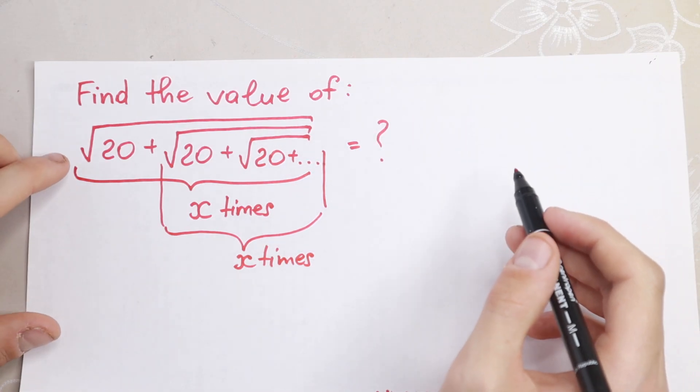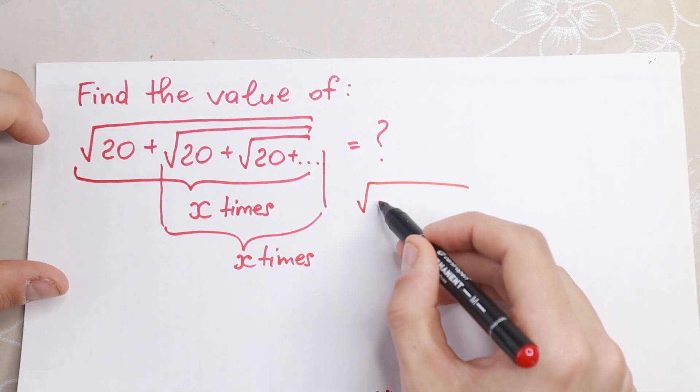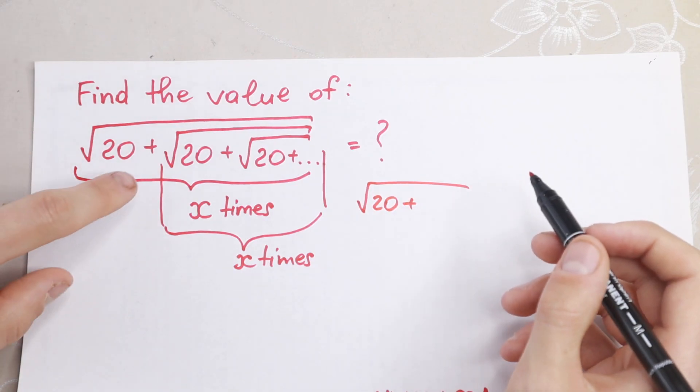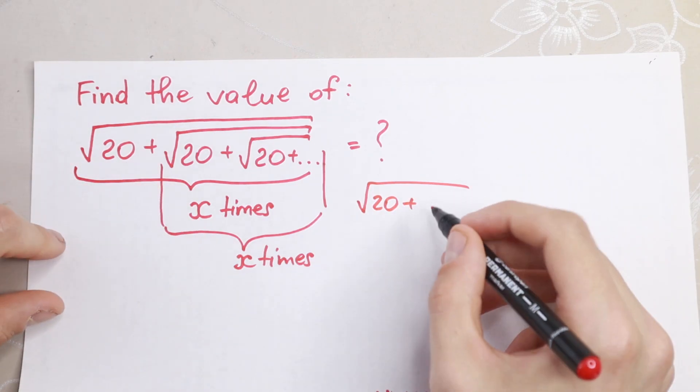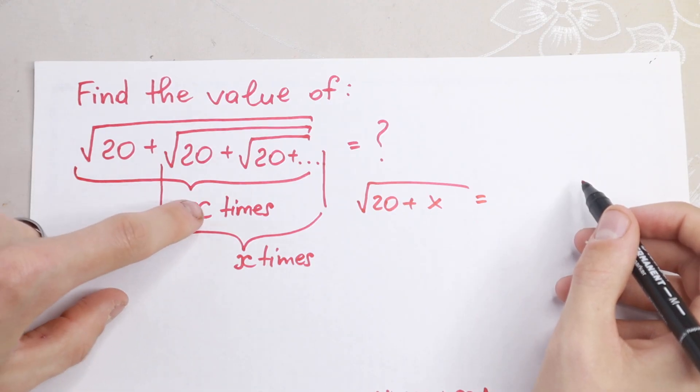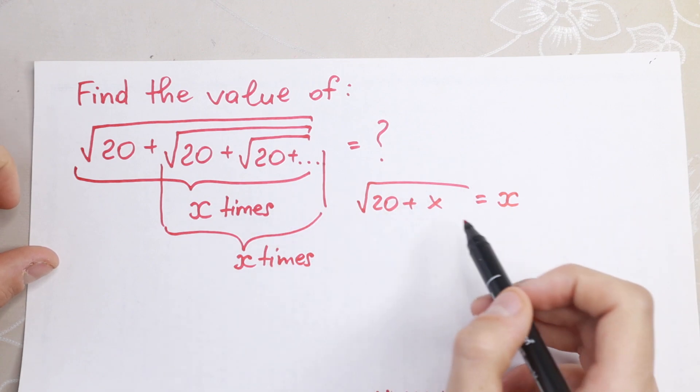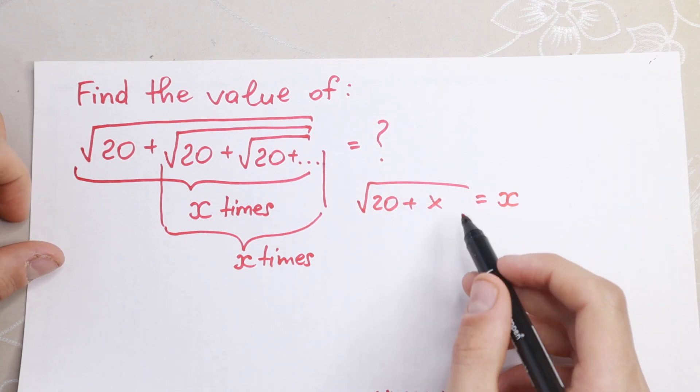So what equation will we have? Take a look. I take this square root of 20, plus right here we will have x, x times, plus x, equal to—of course this we set as x—equal to x. So our sum goes to this interesting equation.